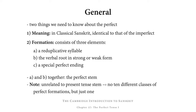As far as the formation of the perfect is concerned, we have three elements: first, a so-called reduplicative syllable; second, the verbal root in either strong or weak form; and thirdly, a special perfect ending. The reduplicative syllable and the verbal root together form the perfect stem, which is unrelated to the present tense stem. That means there are no ten different classes of perfect formations — just the one we need to learn for all Sanskrit verbal roots.